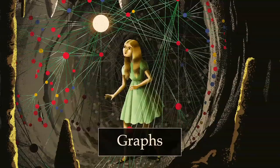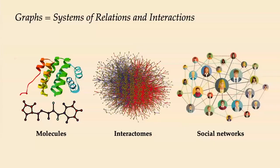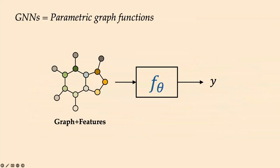Graphs are important mathematical abstractions for systems of relations and interactions at all scales — from tiny things like molecules where nodes are atoms and edges are chemical bonds, to very large objects like social networks capturing relations between people on a planetary scale. Graph neural networks are parametric functions taking as input a graph with associated features and producing some output — for example, in virtual drug screening we predict whether a molecule will be toxic or soluble in water.